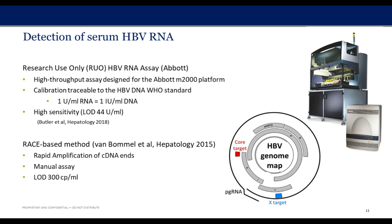To facilitate this research, Abbott has developed an HBV RNA assay that is highly automated on the M2000 platform. We designed the assay to be high-throughput, reproducible, and precise, with excellent sensitivity and a limit of detection of about 44 units per milliliter. We calibrated our HBV RNA units to the WHO DNA standard for a frame of reference. We also compared this test to the existing manual method published in Van Bonnel et al., a RACE method — rapid amplification of cDNA ends — which has a limit of detection of about 300 copies per milliliter and is quite labor intensive.